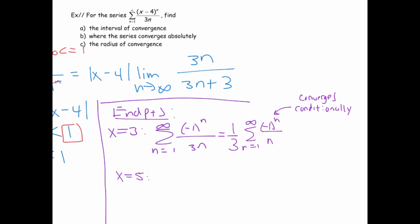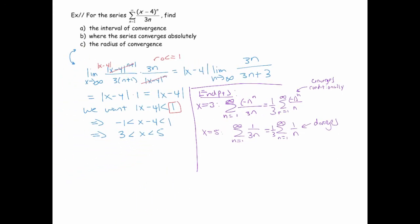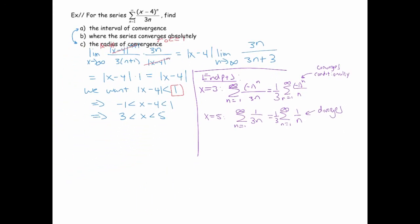When we plug in x equal to 5, we get 5 minus 4, which is 1, so we get 1 to the n over 3n — this is the same as 1/3 times the harmonic series, which we know diverges. So there's our interval of convergence: from 3 (included) to 5 (excluded).